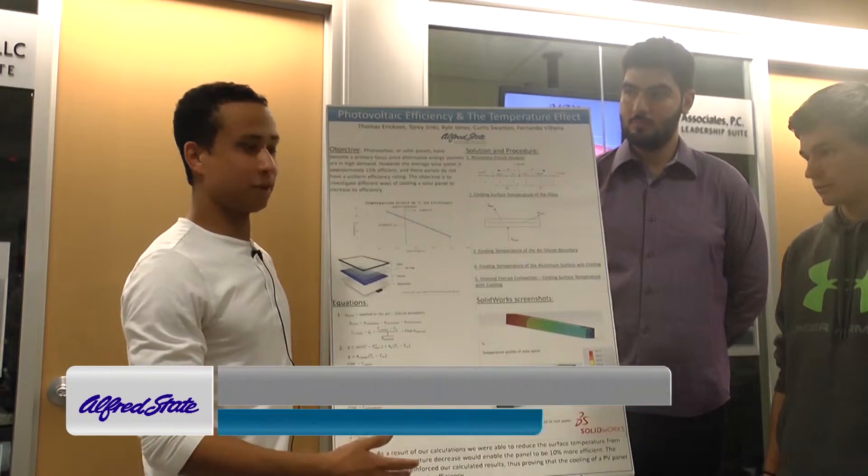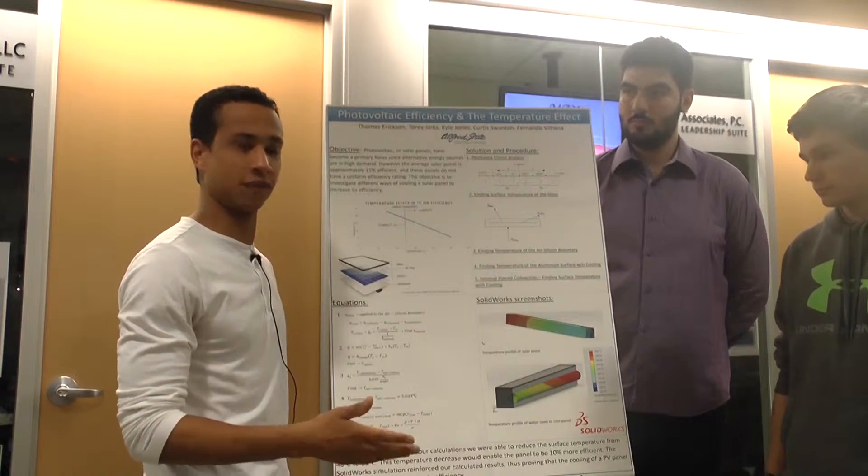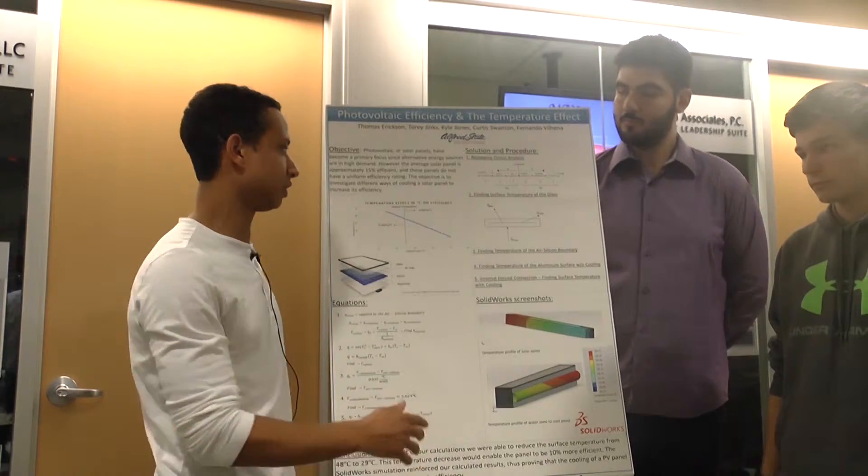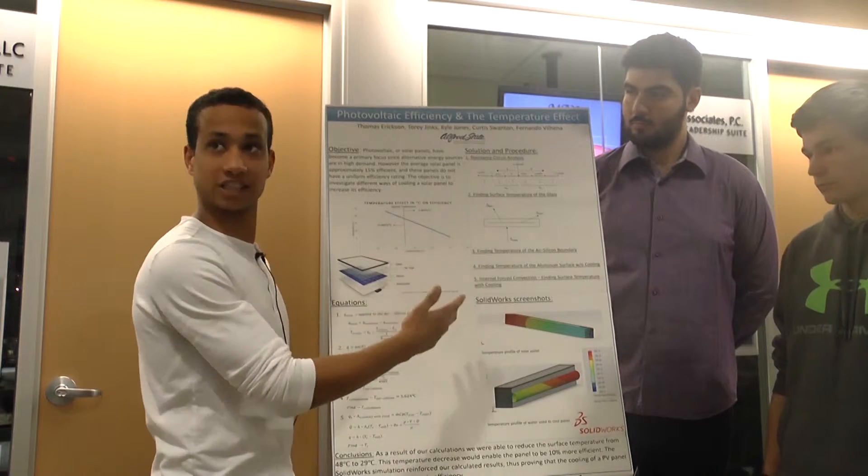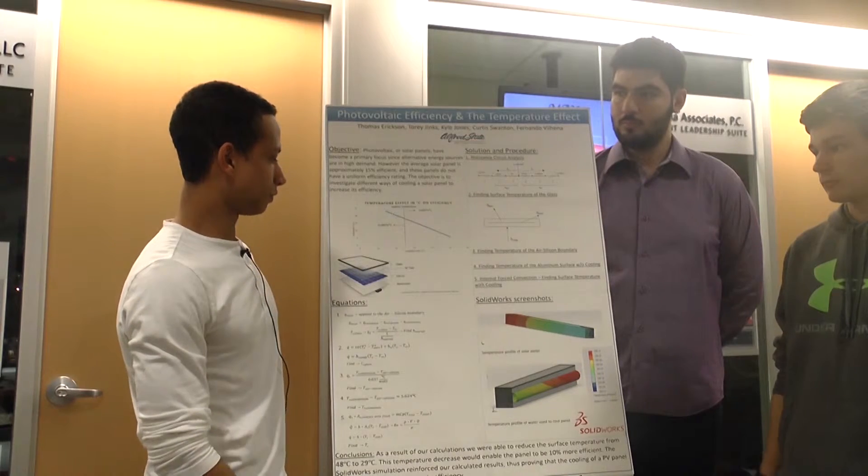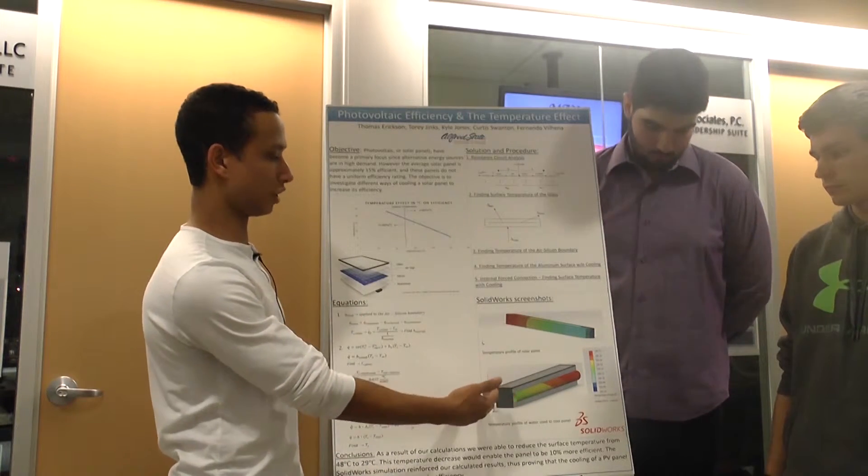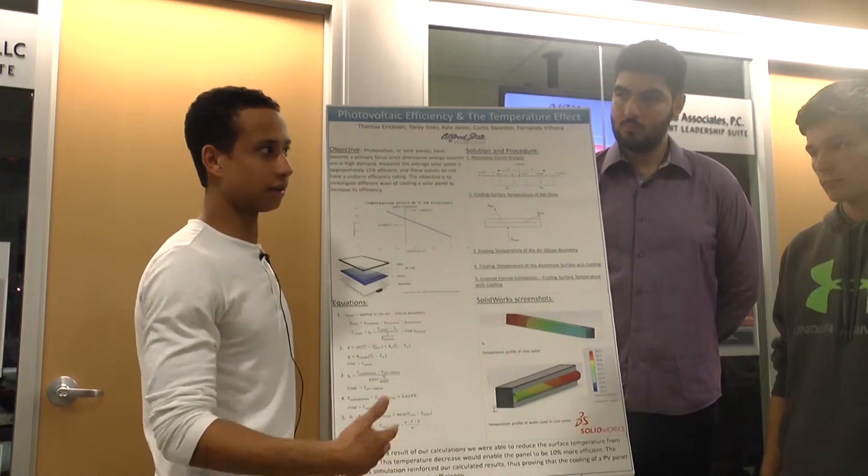So a PV panel needs to operate at about 25 degrees Celsius to be efficient, 18% efficient. The warmer it gets, the less efficient it becomes, and that's about half a percent. So our project, we tried to figure out what we could do to lower the temperature when it's getting higher.